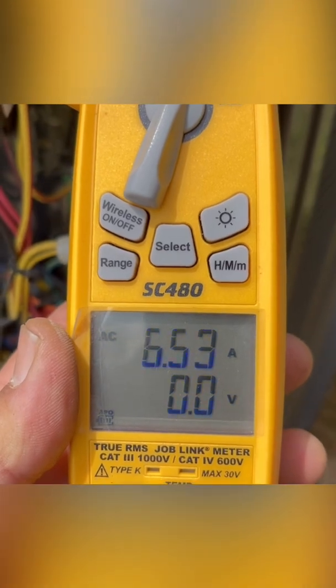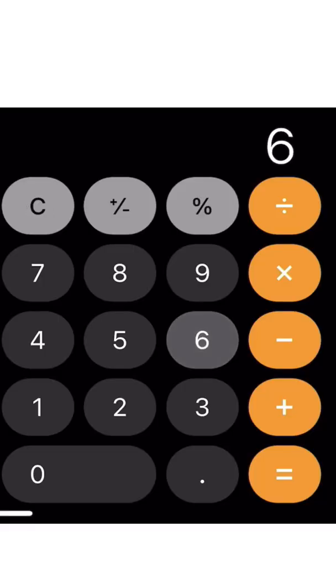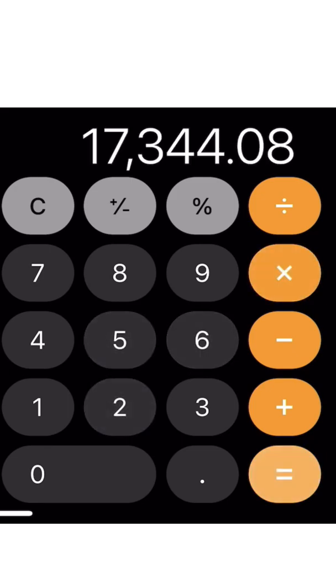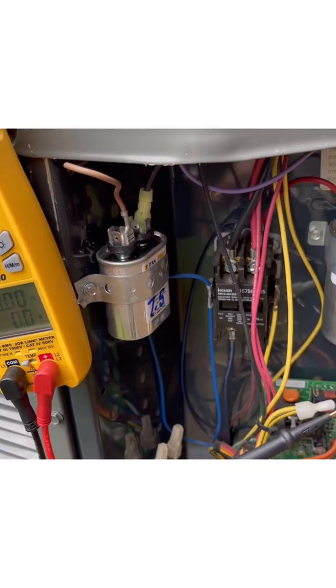Then we're going to put that in and times it by 2652, always 2652. Keep this number, remember it, or either keep it on your calculator.